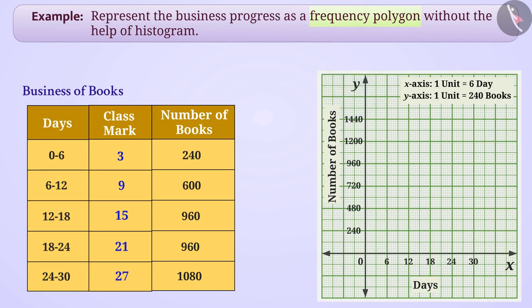We will then denote the class mark and their frequency of all the class intervals from the points B 3 and 240, C 9 and 600, D 15 and 960, E 21 and 960 and F 27 and 1080 respectively. After this, we will connect all the points to complete the frequency polygon.